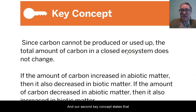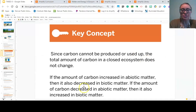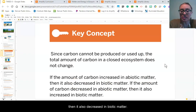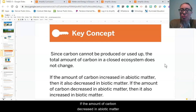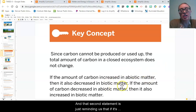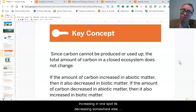Our second key concept states that if the amount of carbon increased in abiotic matter, then it also decreased in biotic matter. If the amount of carbon decreased in abiotic matter, then it also increased in biotic matter. That second statement is just reminding us that if it's increasing in one spot, it's decreasing somewhere else, and vice versa.